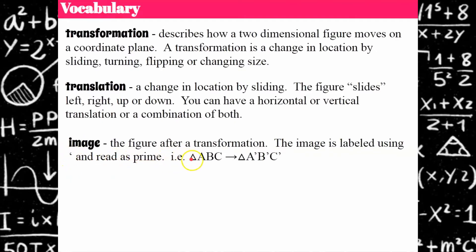Here's an example: Triangle ABC was changed — transformed — to triangle A prime, B prime, C prime. This notation doesn't say what the transformation was; it's just noting that when you see a figure labeled with these primes, it is the transformed image of the original figure.